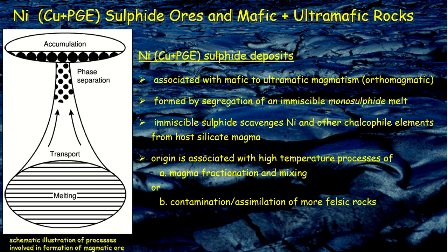The origin of these immiscible sulfides and associated ores are linked to high-temperature processes and have been linked to magma fractionation and mixing, or contamination and assimilation of felsic substrate into the komatiite magma. When this happens, it lowers the sulfur solubility in those magmas and may therefore promote formation of immiscible sulfides.